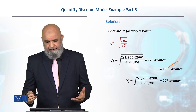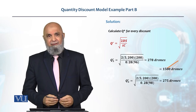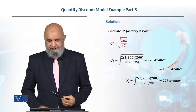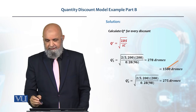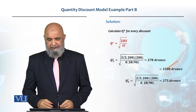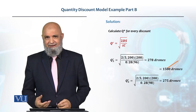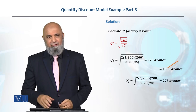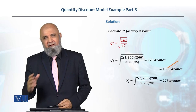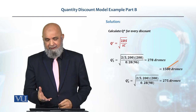We have to calculate the economic order quantity for every discount, and we will start from the lowest price. Starting from the lowest price, the calculation for Q3 comes to 278 drones. Since Q3 is greater than 1500, we cannot avail that price.